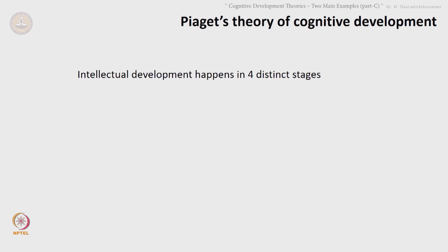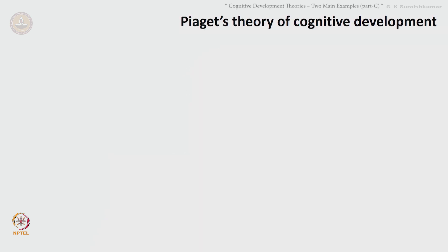Piaget's theory says that intellectual development happens in four distinct stages. It is a continuous process; there are no abrupt changes. The order of progression is the same for all. However, the rate of progression could be different for each child. A child may be in two different stages in different aspects at the same time.